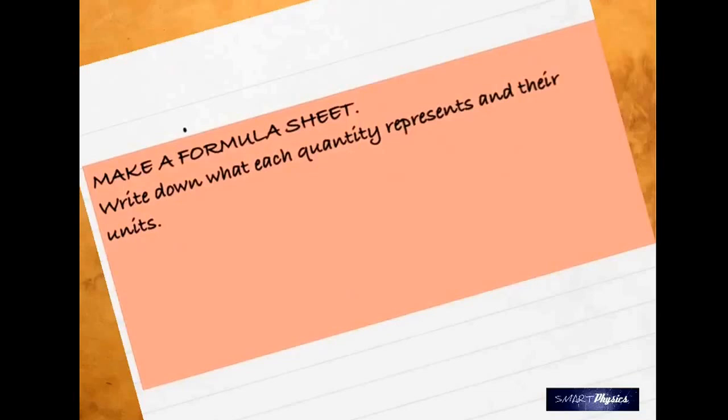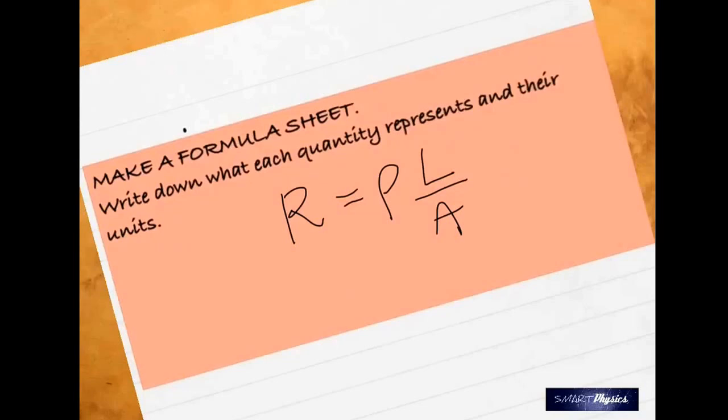For example, if there is an equation like resistance is equal to rho times L by A, let me write that down for you: R = ρL/A. You look at those quantities and say R stands for resistance, it's measured in ohms, and it's a property of a conductor whereby it resists the flow of current.